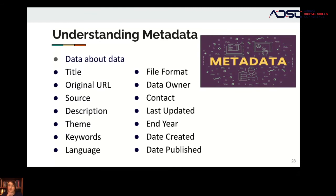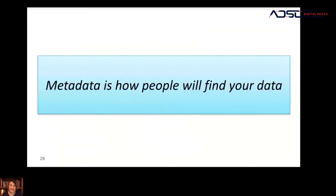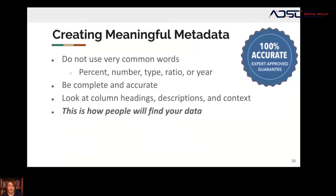Your metadata is how people are going to find your data, so make sure you include it and tie it to the correct data set. When creating metadata, you want it to be meaningful — specific. You don't want to use common words like percent, number, type, ratio, or year. Instead, be complete and accurate. If you're not sure what to include, look at the column headings, descriptions, and context. You want your metadata to be meaningful and distinct so people find your data set without having to sift through a bunch of others.